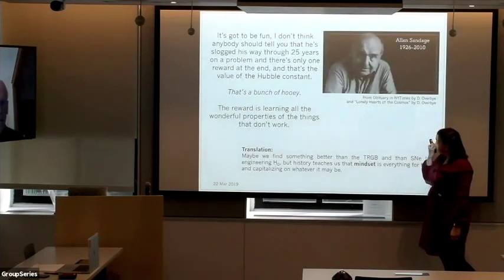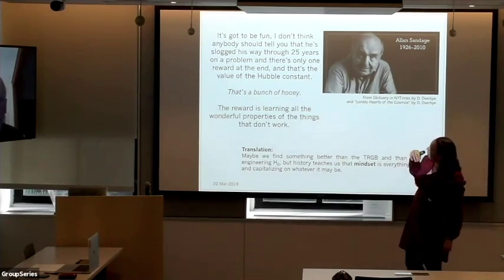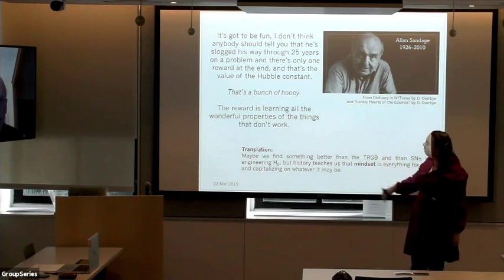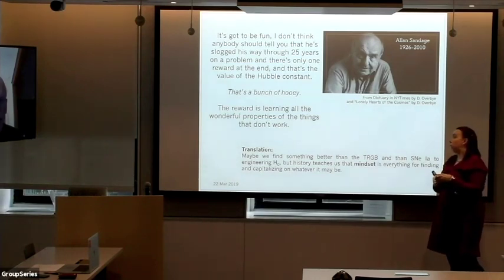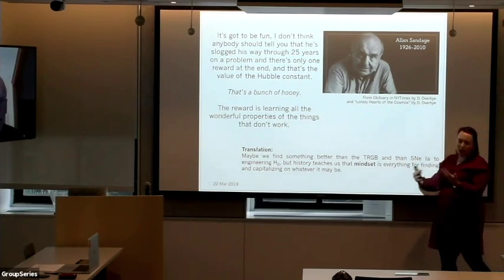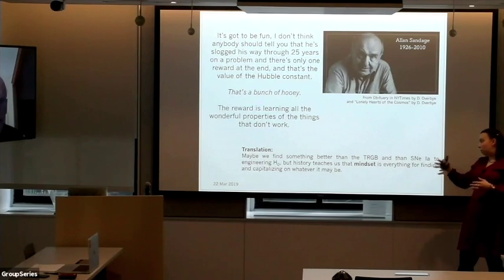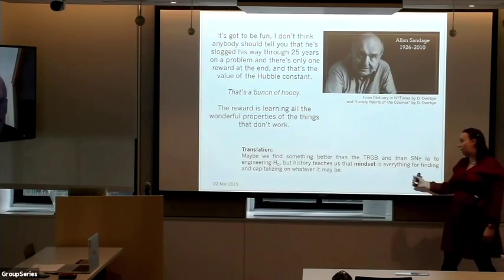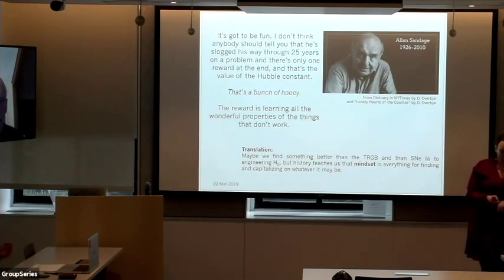To summarize: the TRGB might not be the technique we use at the end of the day for the most precise Hubble constant measurement. But as Alan Sandage said, 'It's got to be fun—the reward is learning all the wonderful properties of the things that don't work and doing science with that.' We've put forward a path to do more cosmology and calibrate more things. Having an open mind to new techniques is important in cosmology because we don't know what it is that we don't know.